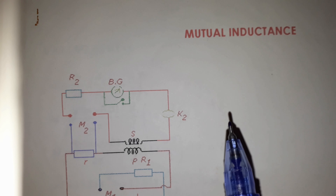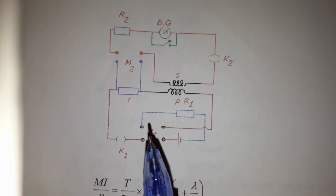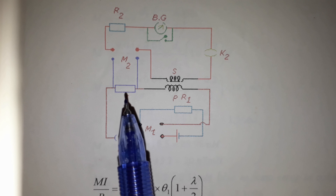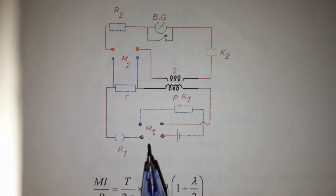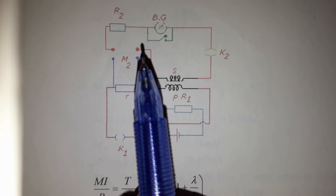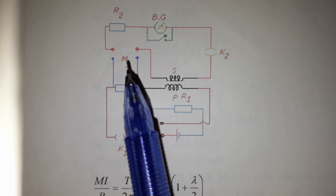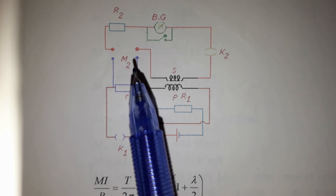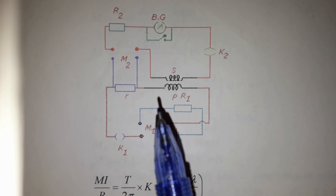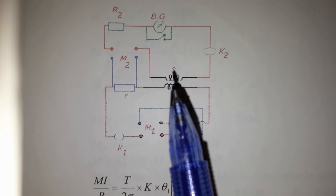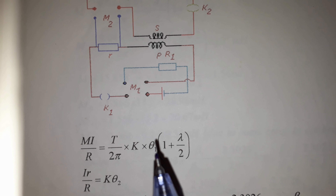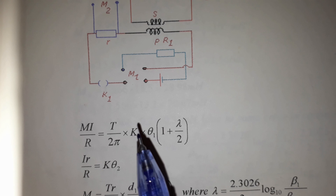The circuit for determining mutual inductance between two coils includes a very small resistance r — say 0.01 ohm or 0.1 ohm. There is a plug commutator and a key system. When the key is placed between the two circuit points, the two circuits are separated. Only the flux change in the primary causes a flux change in the secondary, which gives the ballistic throw.